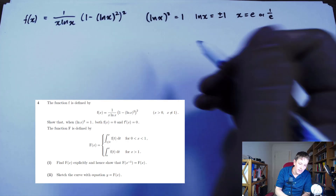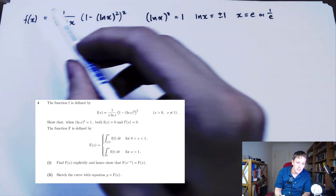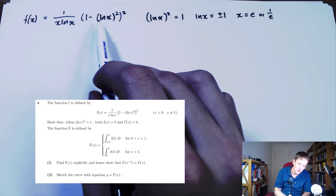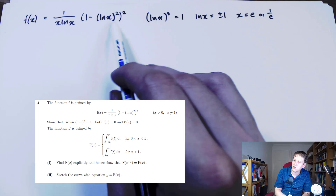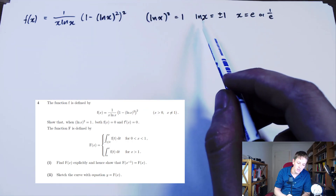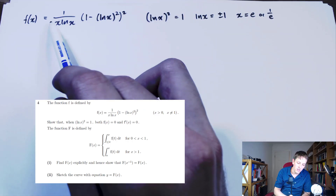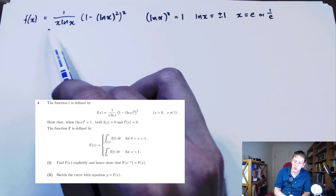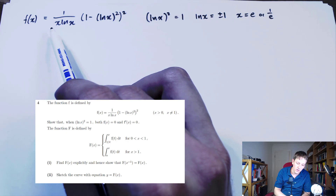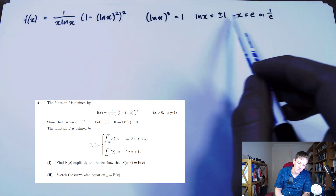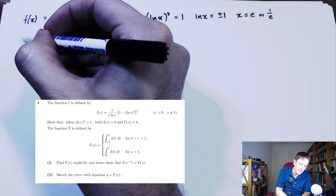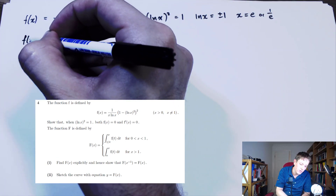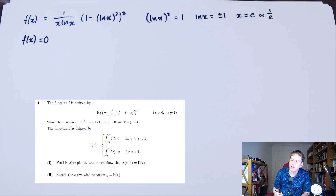Showing that f(x) = 0 isn't just as simple as saying this bracket is 0. We also want to notice that the denominator is not 0 — x·log x is not 0. And 1 − log²x is 0, so we get f(x) = 0. Of course you should write an argument out to that effect.